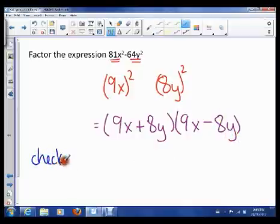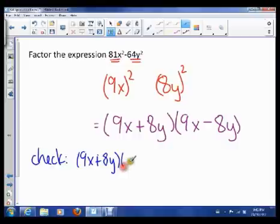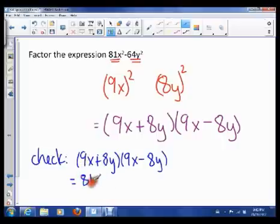Now, if I ask you to check, all you have to do is actually write out 9x plus 8y, 9x minus 8y. And that is 9 times 9 is 81x squared, 9 times negative 8 is negative 72, plus 72 cancels out. And this is minus 64y squared, which is what I started with. So that's that.